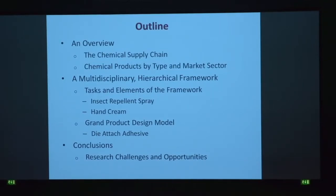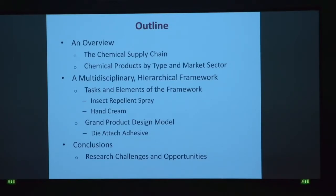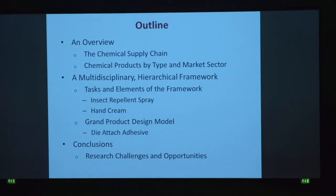This is the outline. We will talk about products in the chemical supply chain, classifying them by type and by market sector. Then we talk about the tasks in the product design framework, and the elements used to execute those tasks. We will emphasize one element of the framework, the grand product design model, and use three examples to illustrate the concepts.